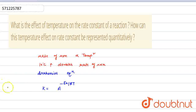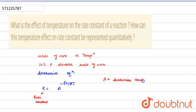Where k is the rate constant, A is the Arrhenius constant, Ea is the activation energy, T is the temperature, and R is the gas constant.